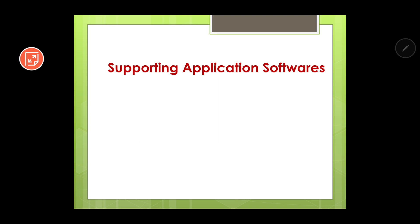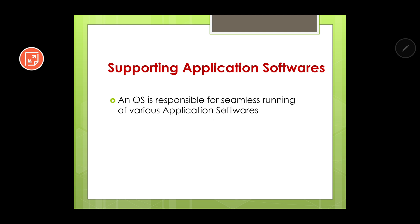Next is supporting application softwares. The operating system gives an environment for application softwares to run. Whatever programs you run over the operating system — like Microsoft Word — you cannot use them without installing an operating system first. Programs that run over the operating system and do specific work are known as application softwares. Examples include MS Word, MS PowerPoint, games, MS Paint, and Adobe Photoshop. An operating system is responsible for the seamless running of various application softwares.